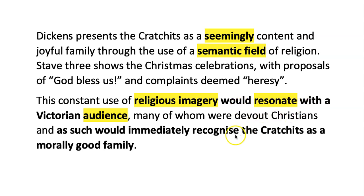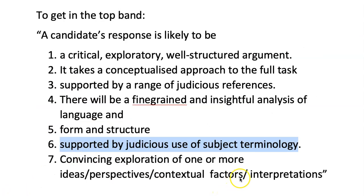The other stuff I have in bold is how Lissy uses context. She talks about a Victorian audience and says they would immediately recognize the Cratchits as a morally good family. What happens here is that the context works within the sentence — there isn't a separate paragraph for context. Contextual factors appear in point seven, and these bits of context are put inside a sentence where you, the student, are exploring an interpretation. Here, Lissy is arguing that Dickens deliberately uses Christian language to tap into the Christian morality of the readers, so that they will see it's their moral duty to help the poor.